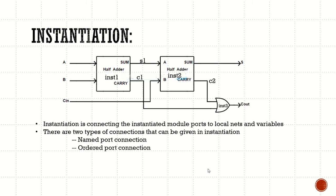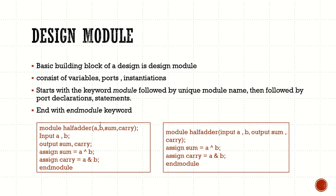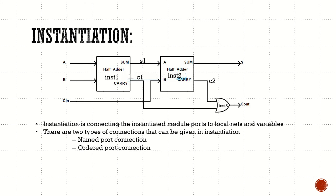What is instantiation? Instantiation is nothing but taking instances of modules which are already coded. For example, if we want to design a full adder, we know a full adder can be designed from two half adders. Since we have already coded the half adder, we can use that design and create a full adder by instantiating — calling those two half adders into our design — creating an instance in our design.